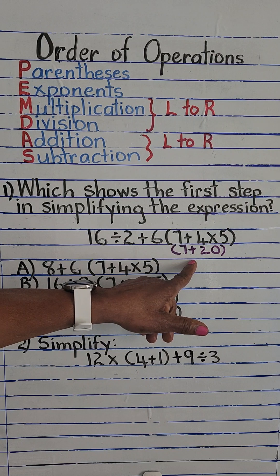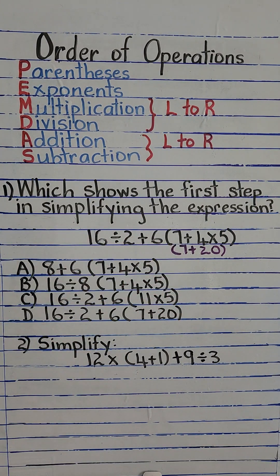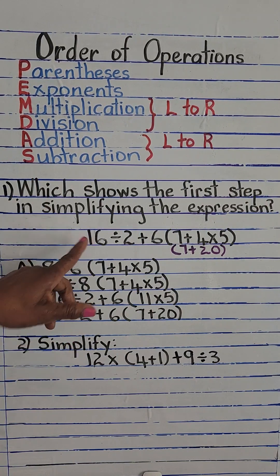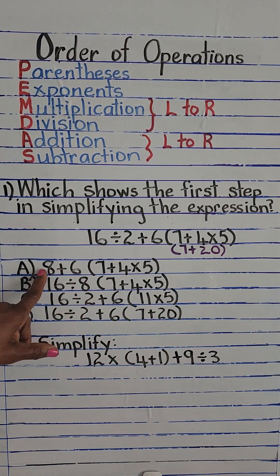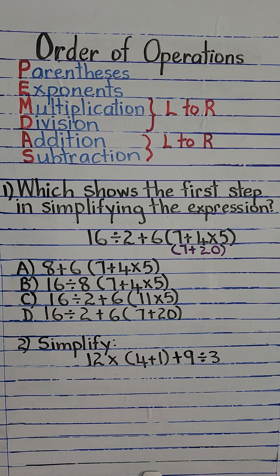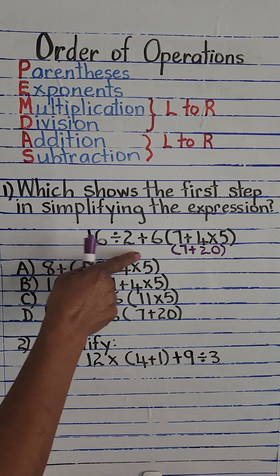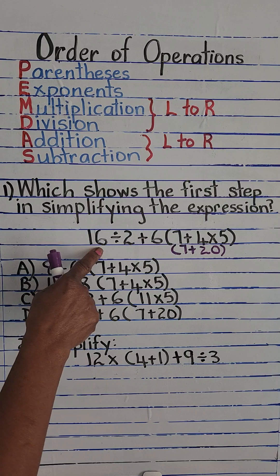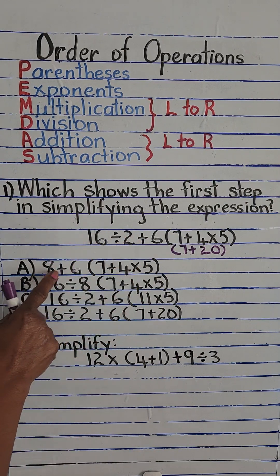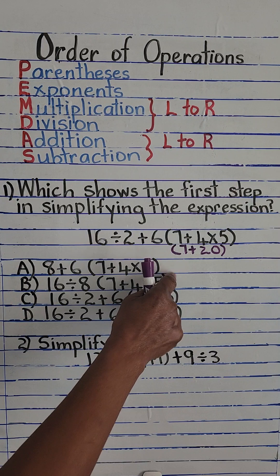So let's simplify this parentheses: we still have parentheses, and we have 7 plus 4 times 5 equals 20, because multiplication comes first. That is our first step in simplifying this expression, and that is all we are asked for. Let's see which answer option is correct. We'll eliminate option A because when simplifying an expression we perform operations one at a time — whatever operation we are not performing, we just put it down as it is.